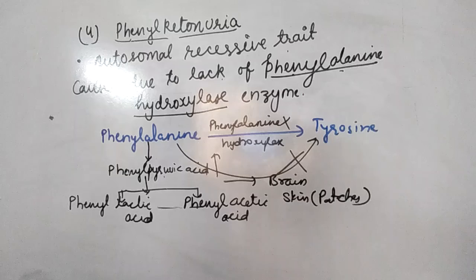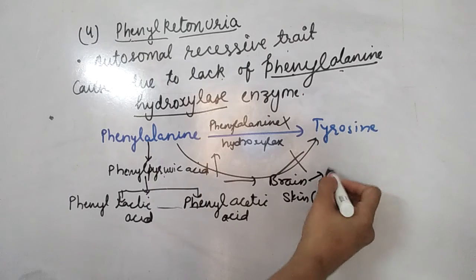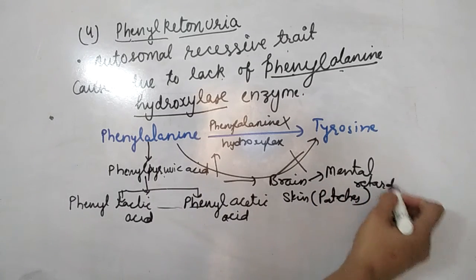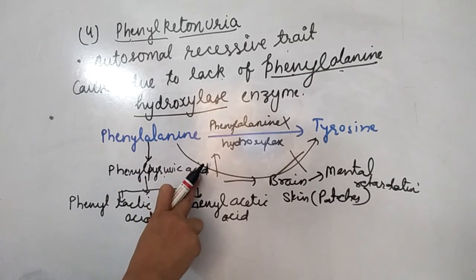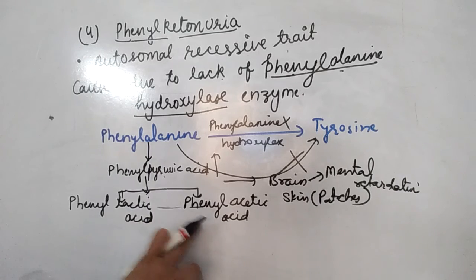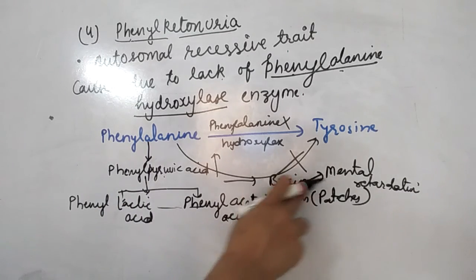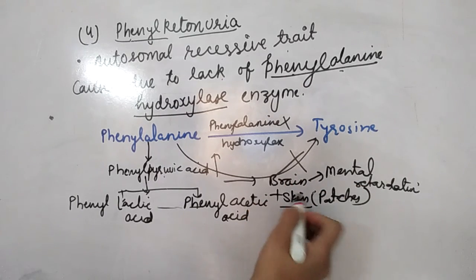Black patches appear on parts of the body such as the nose and ears. Brain damage leads to mental retardation. After birth the child looks normal, but after 4 weeks phenylpyruvic acid levels rise, causing brain damage, mental retardation, and nervous system damage.